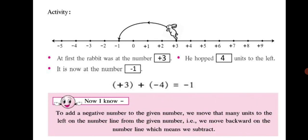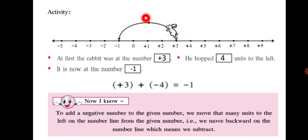Now I know: to add a negative number, we move towards the left of the number line. Whenever you move towards the left on the number line, you are using a negative number. So to add a negative number to a given number, we move that many units to the left on the number line — that is, we move backward, which means we subtract.